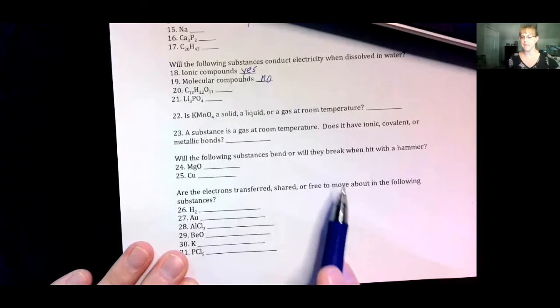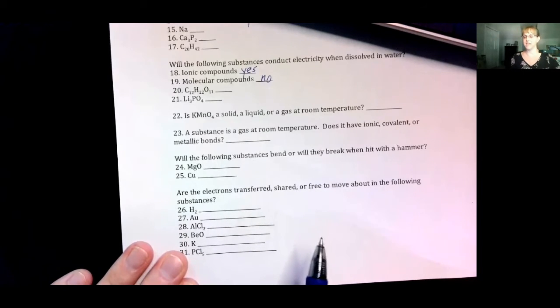Will the following substances bend or will they break when they are hit with a hammer? Ionic compounds are brittle. They break. Metallic substances are malleable. They bend.